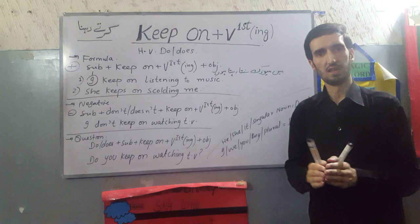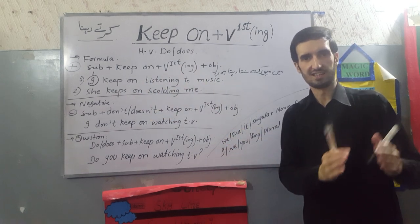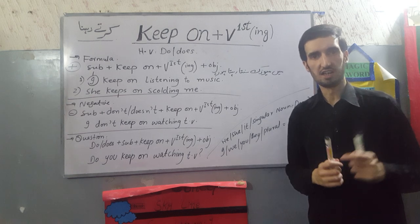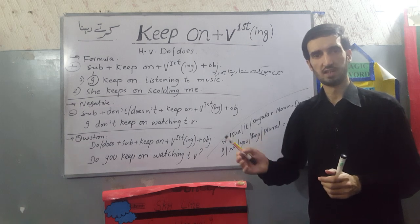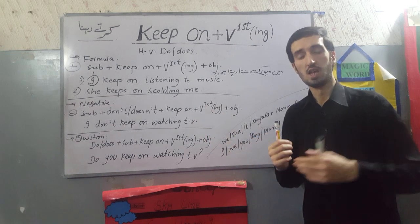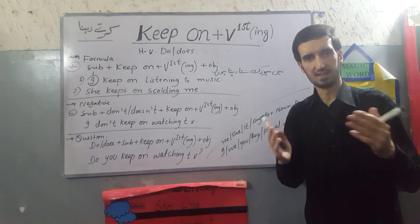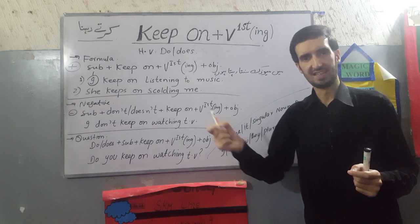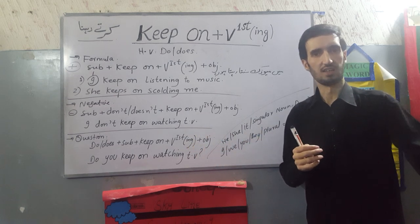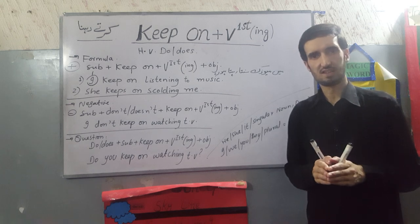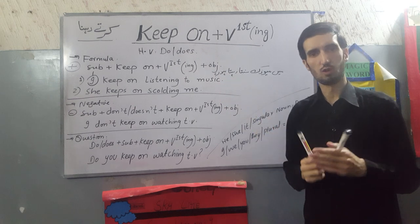For example, I say that he keeps on working. She keeps on reading. They keep on studying. Students keep on watching drama. We keep on playing football. So for these sentences, we use the structure in English that is keep on. It is an important structure and it is very useful.